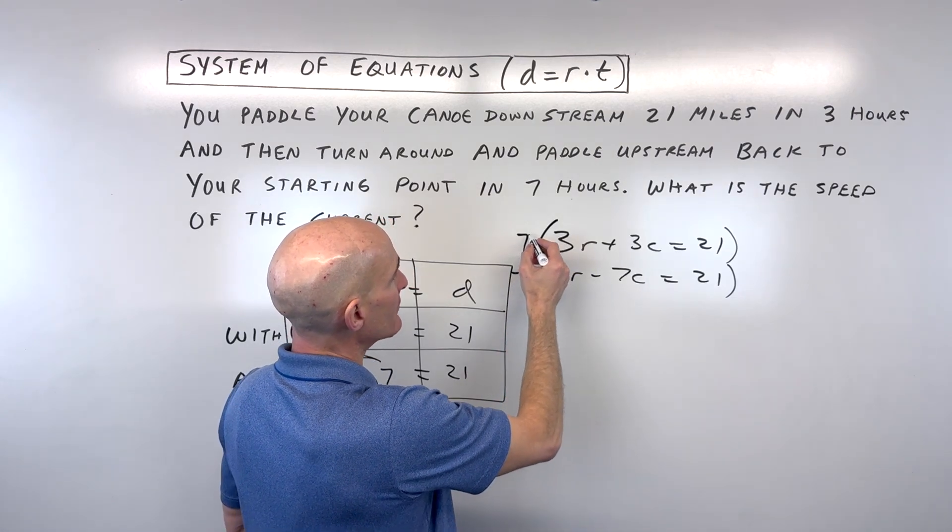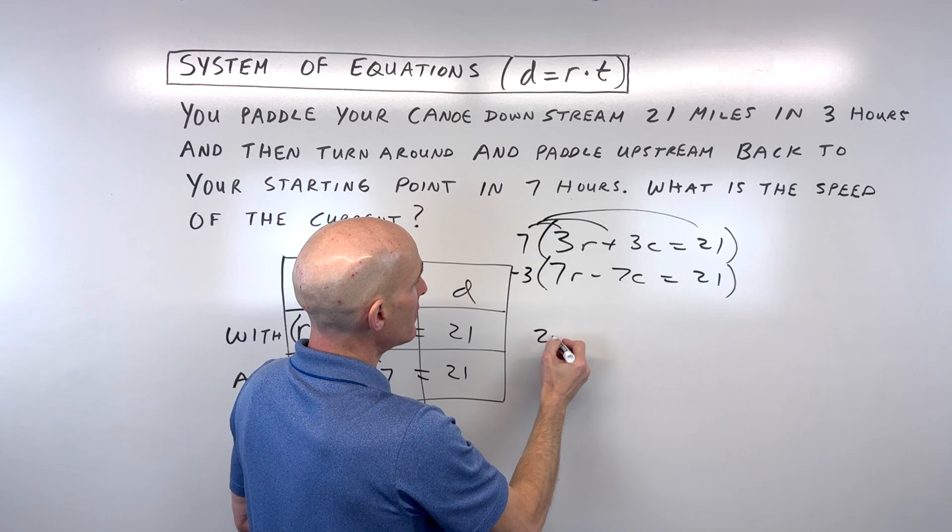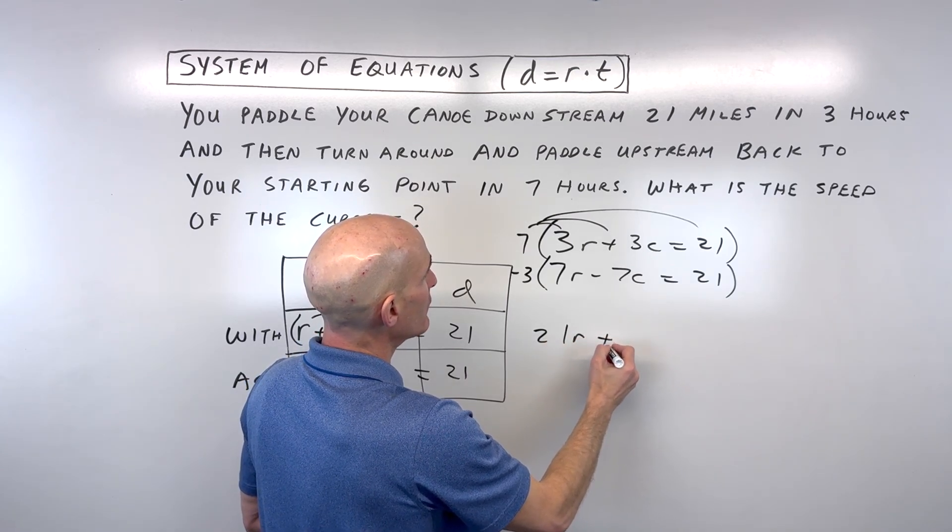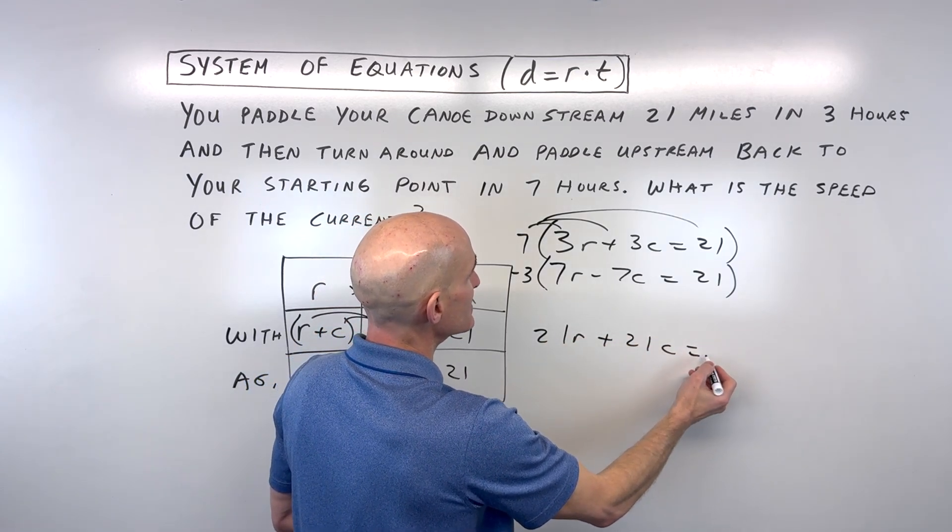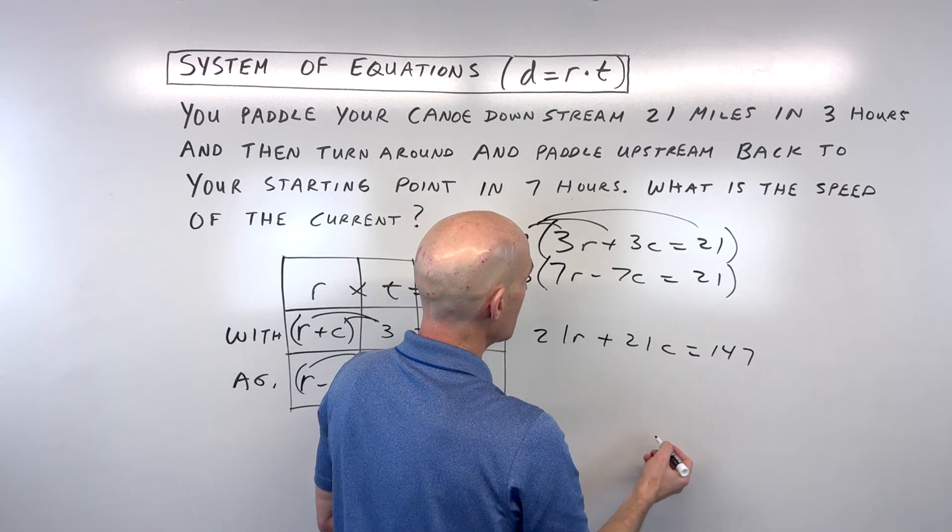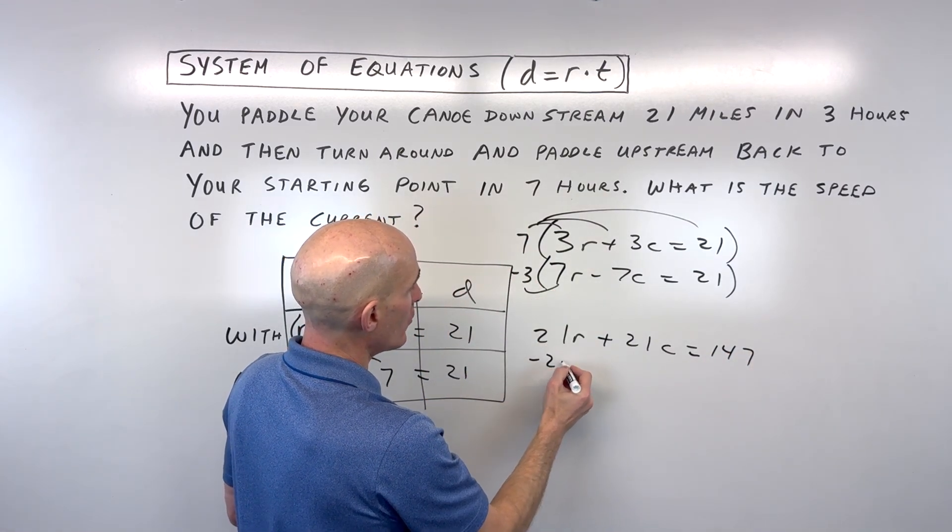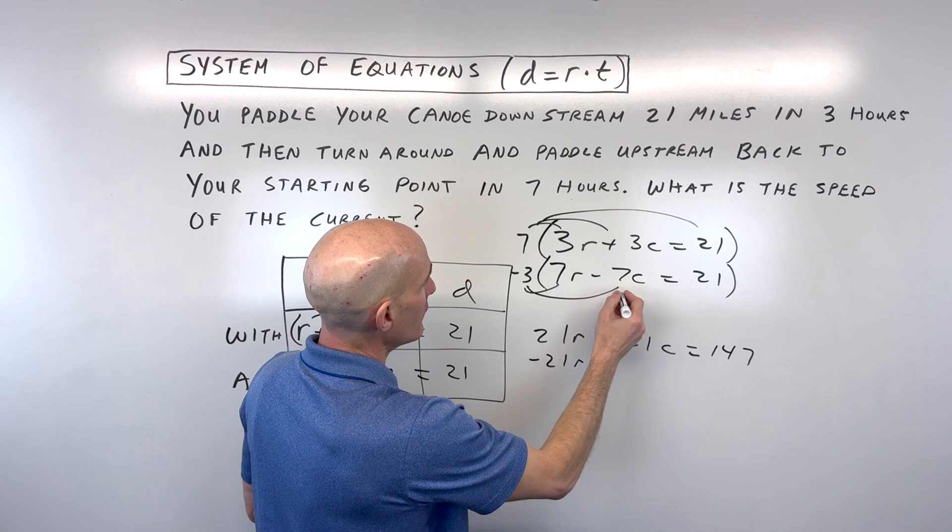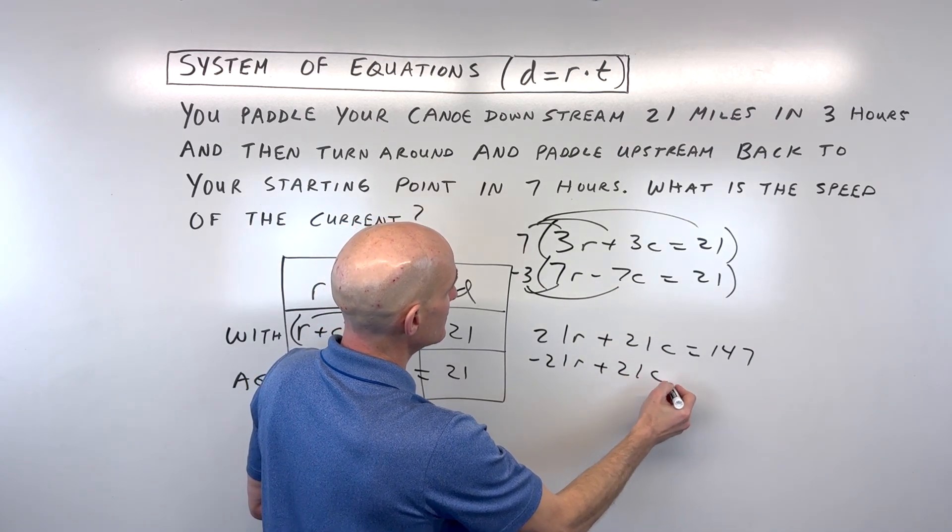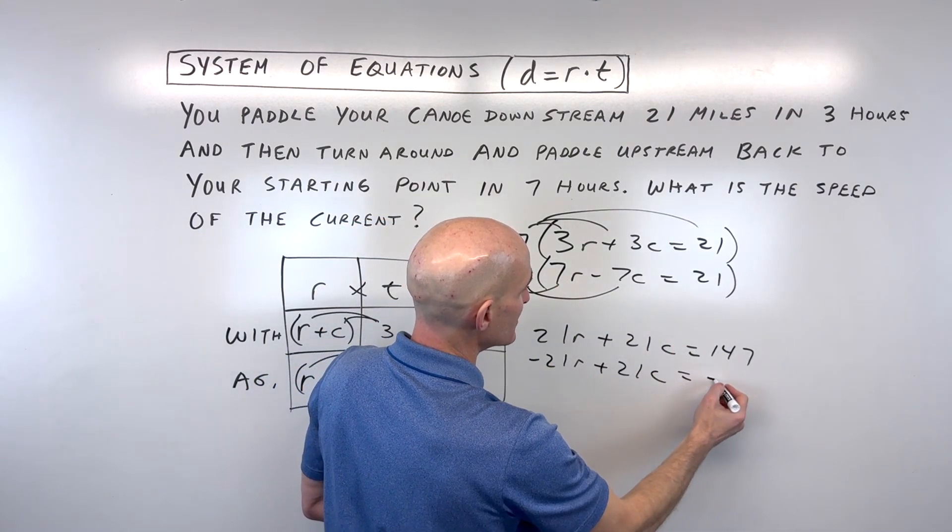So what does that give us? That gives us 21R plus 21C equals 147, and here we get negative 21R plus 21C equals negative 63.